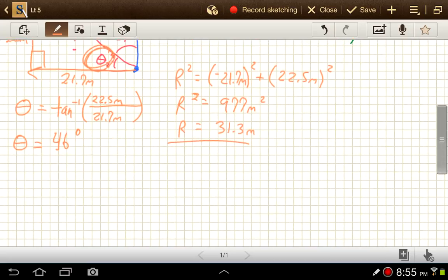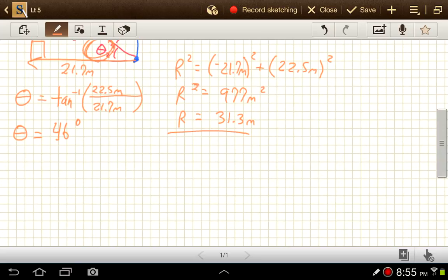And so now I can write that the resultant displacement, sometimes you do an R, we can just do a D here for displacement. The resultant displacement DR is going to be 31.3 meters at an angle of 46 degrees.